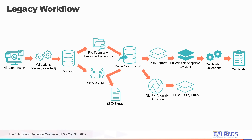This is the way it looked before. If you had rejected records, we would still allow you to post that file — we considered that a partial post, posting all of the things that passed. That's no longer going to be the way the system operates. In the old workflow you could see how partial posts fed the ODS and snapshots, with SSID matching as a side activity.